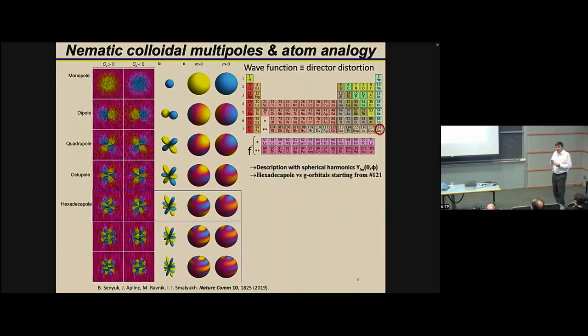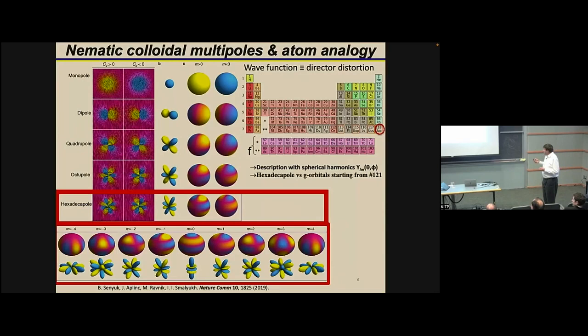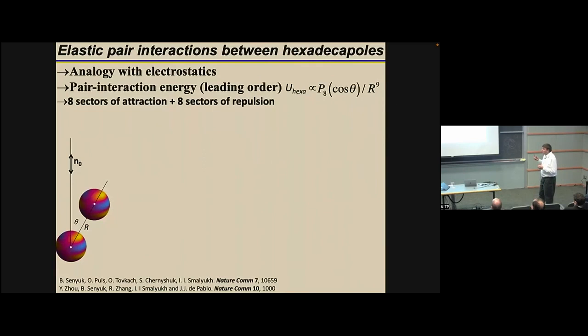Electron shells and wave functions are also described in terms of spherical harmonics. All the chemical elements found so far fill rows in the periodic table; the last element is 118, still in the ground state with filled F orbitals. It would only be in the next row of elements that we would have G-orbitals filled in the ground state. The hexadecapole we have been looking at is such a colloidal atom in terms of spherical harmonics description — corresponding to what we would have in the next row of the periodic table. But the analogy goes beyond description.